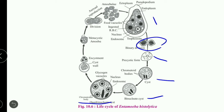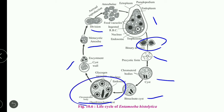The infectious form is the quadrinucleate cyst (tetranucleate cyst). From this cyst, the metacystic amoebae form through division. This is a key question regarding the life cycle diagram.